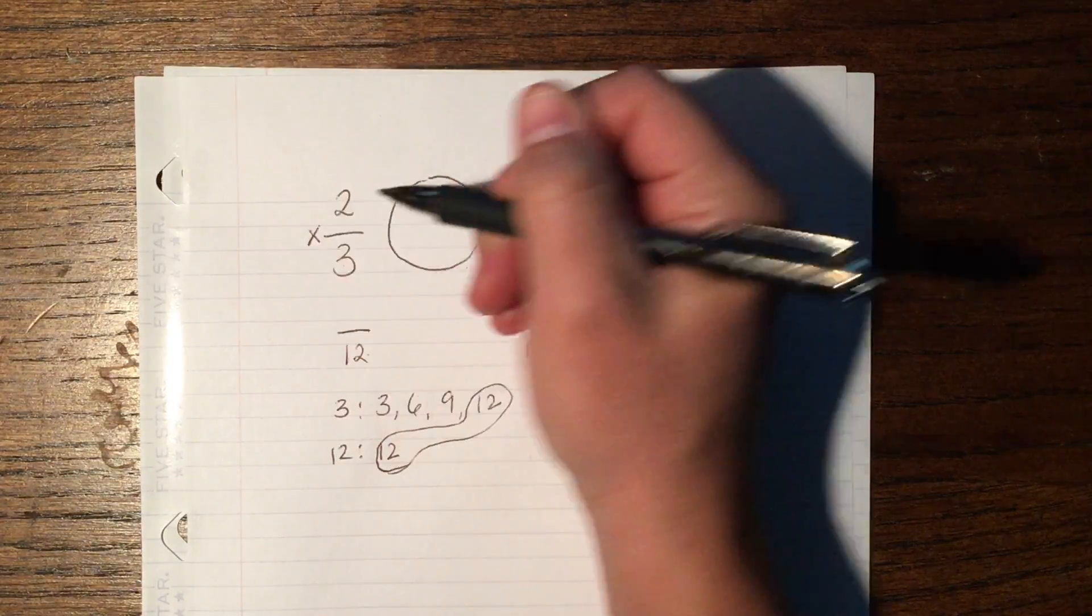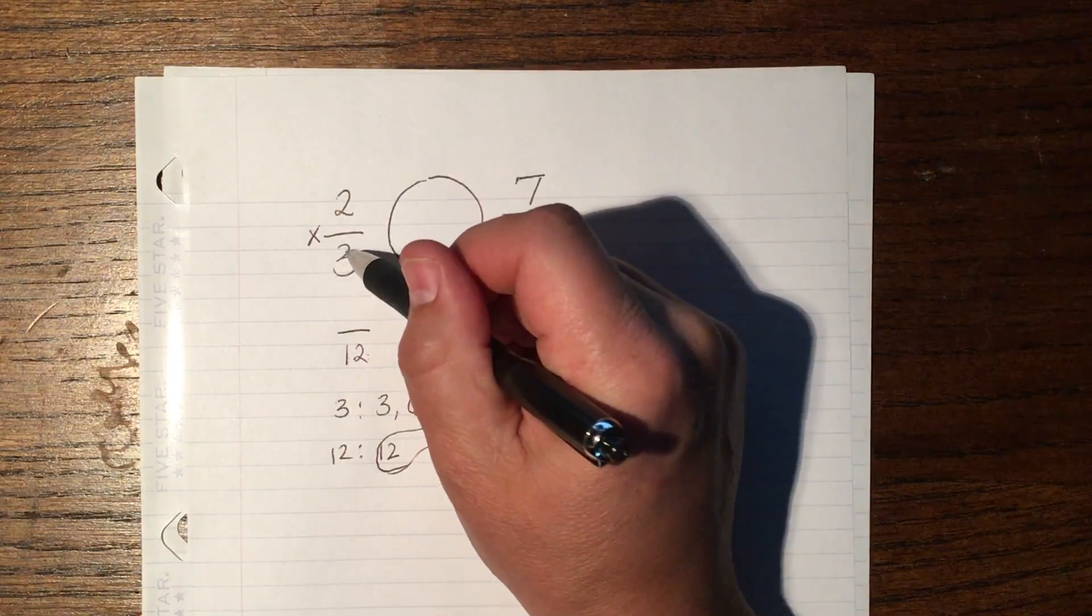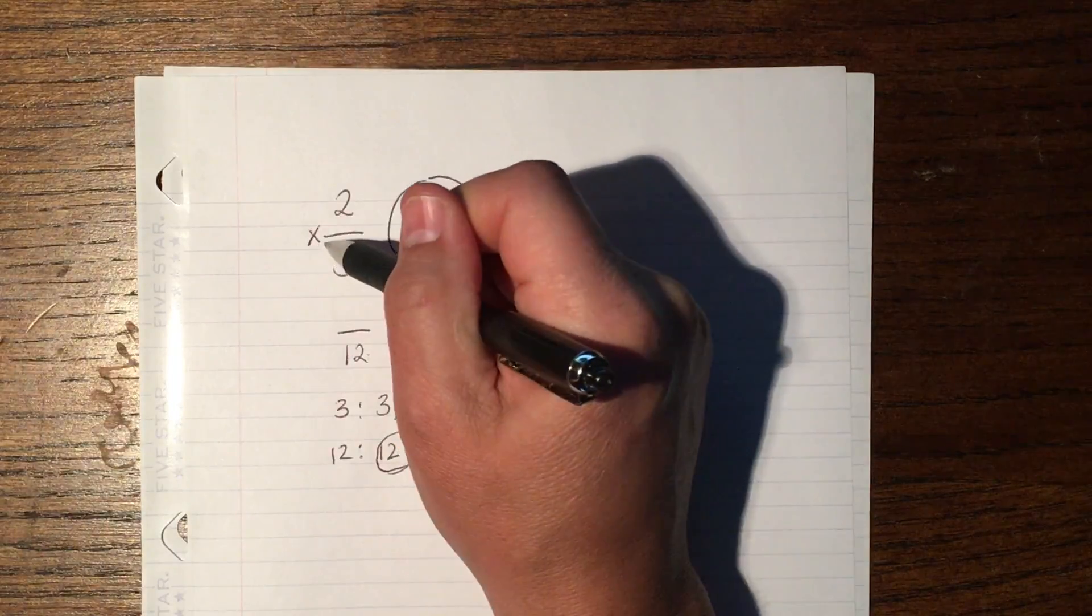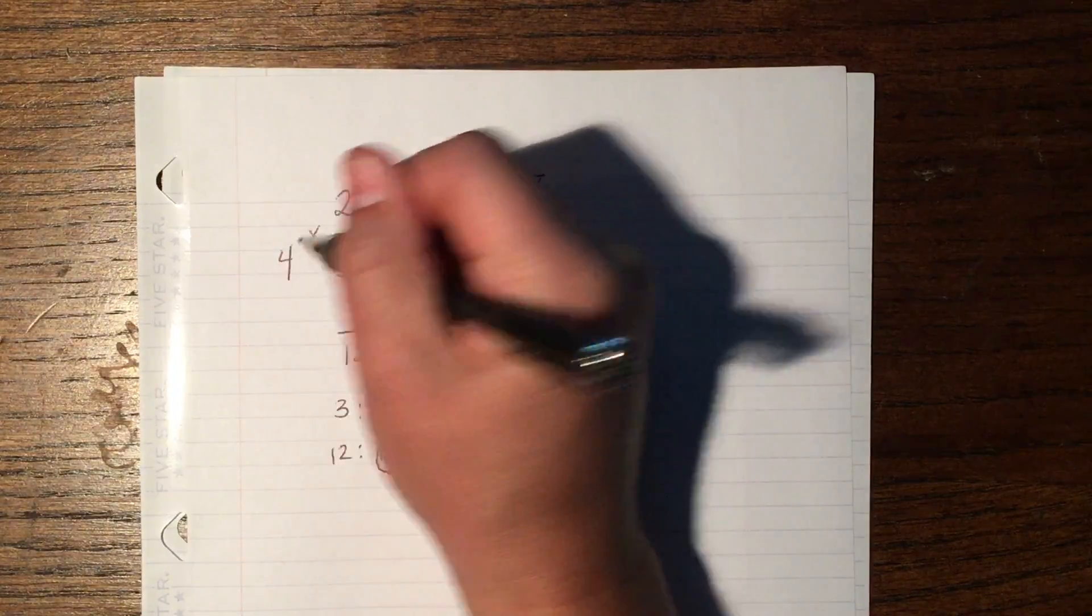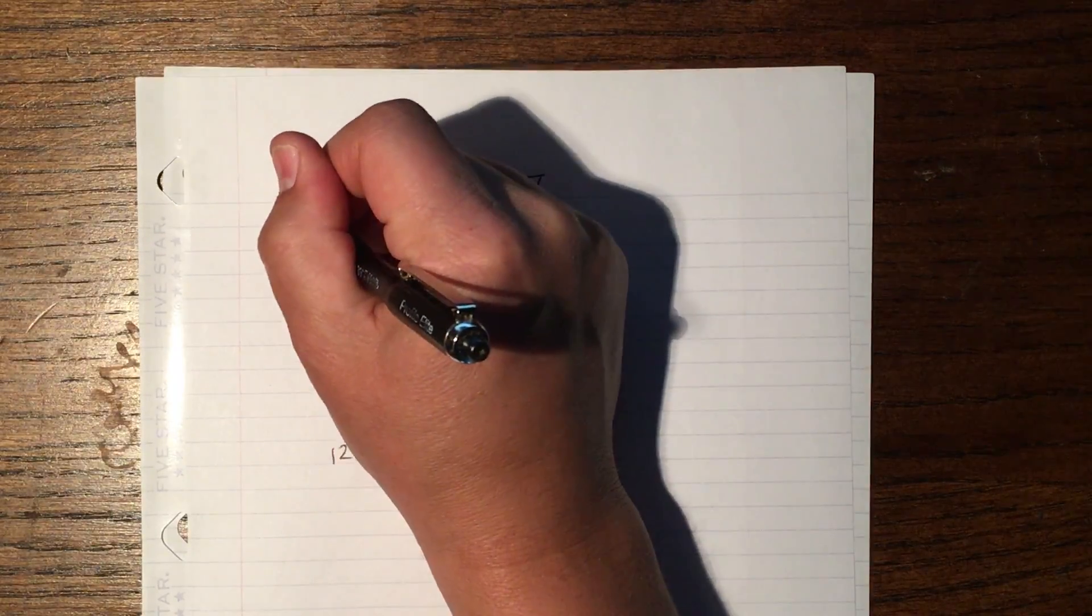In order to do that, I have to multiply the numerator and the denominator by the same number. So I have to ask myself, what did I do to this 3 to get 12? Well, I multiplied it by 4. So whatever I do to the denominator, I also have to do to the numerator.